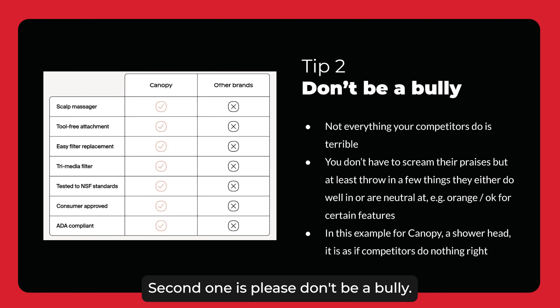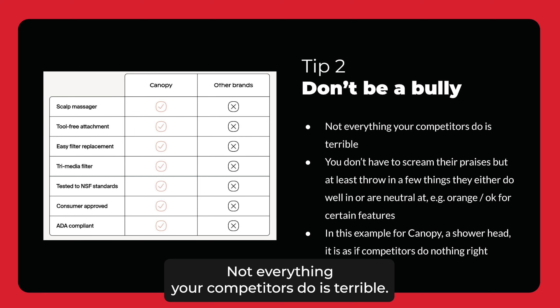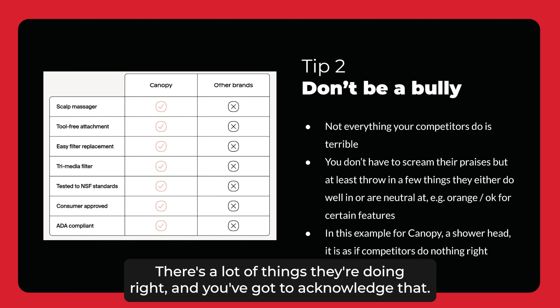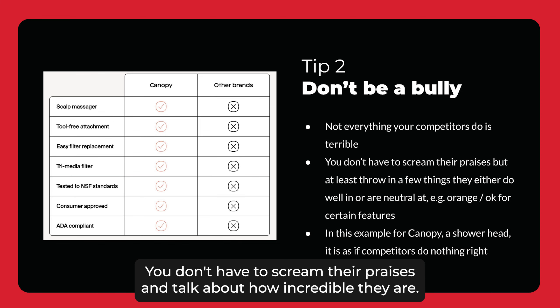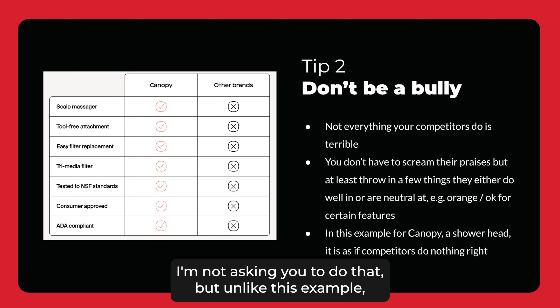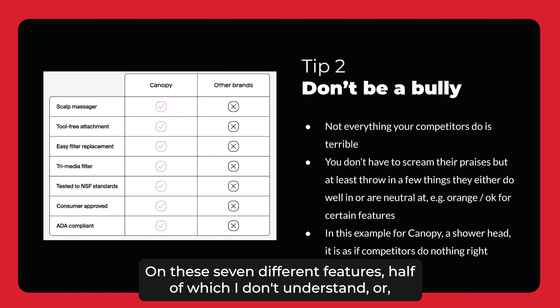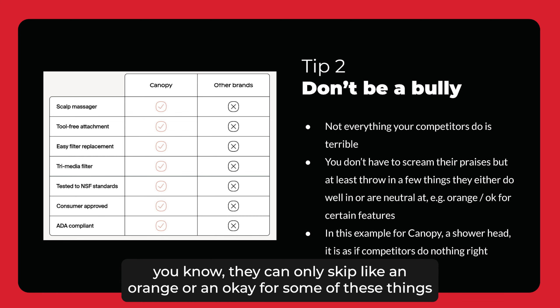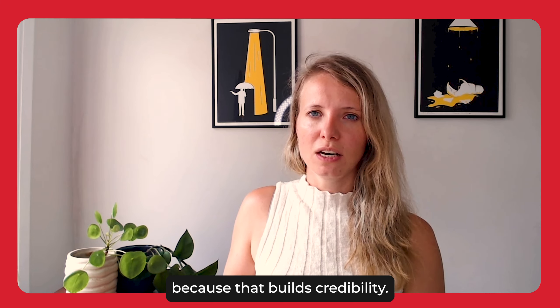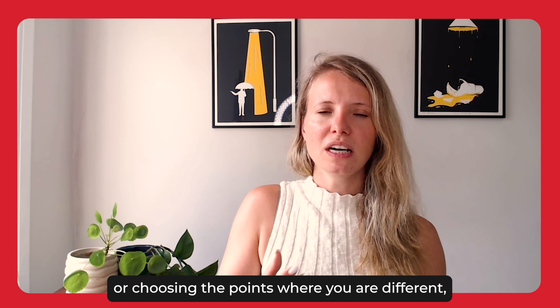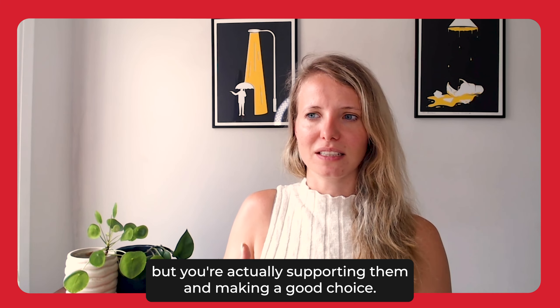The second tip is: please don't be a bully. Not everything your competitors do is terrible — otherwise, they wouldn't be your competitors. There's a lot of things they're doing right and you've got to acknowledge that. You don't have to scream their praises, I'm not asking you to do that. But unlike this example for a showerhead brand where apparently their competitors are doing nothing right on seven different features, half of which I don't understand — you could at least give an orange or an 'okay' for some of these things, because that builds credibility. It shows that you're not just hating on them, but you're actually supporting the customer in making a good choice.